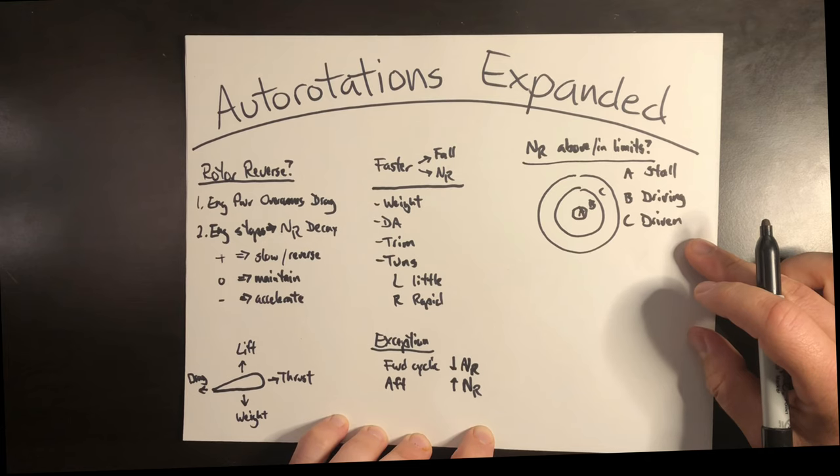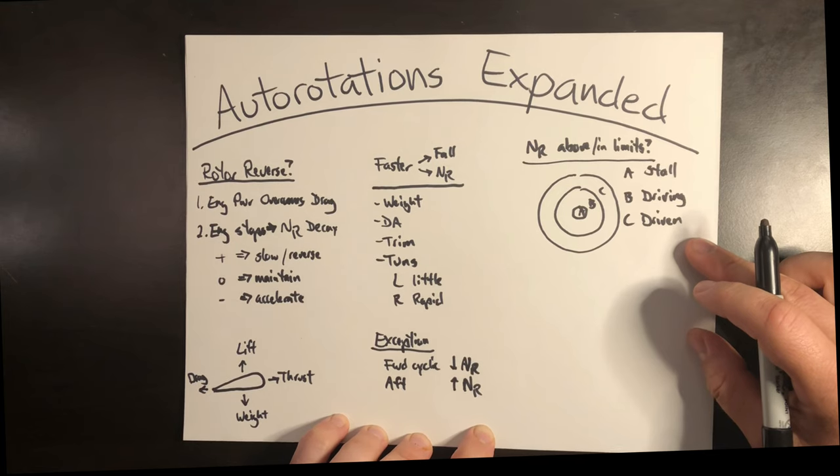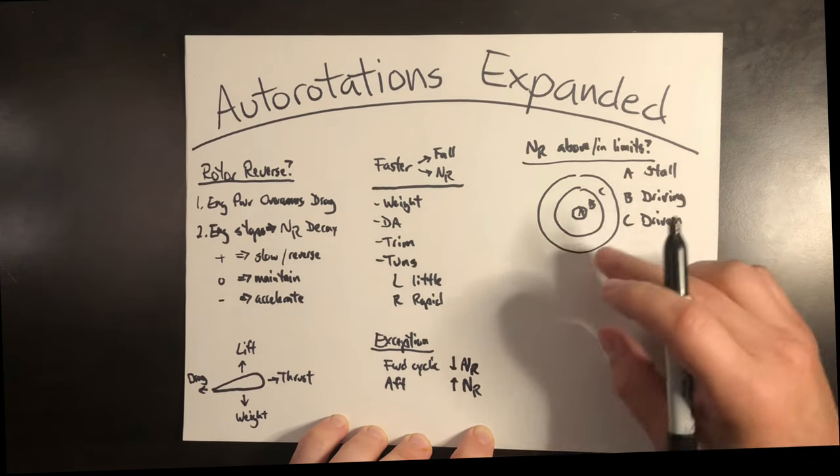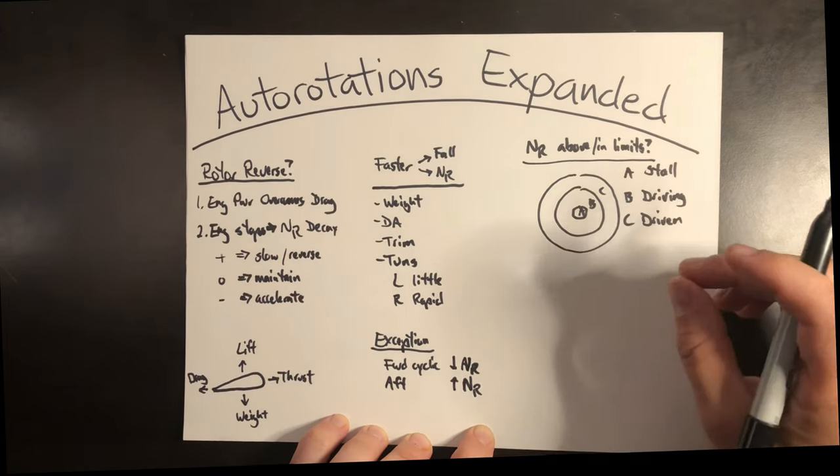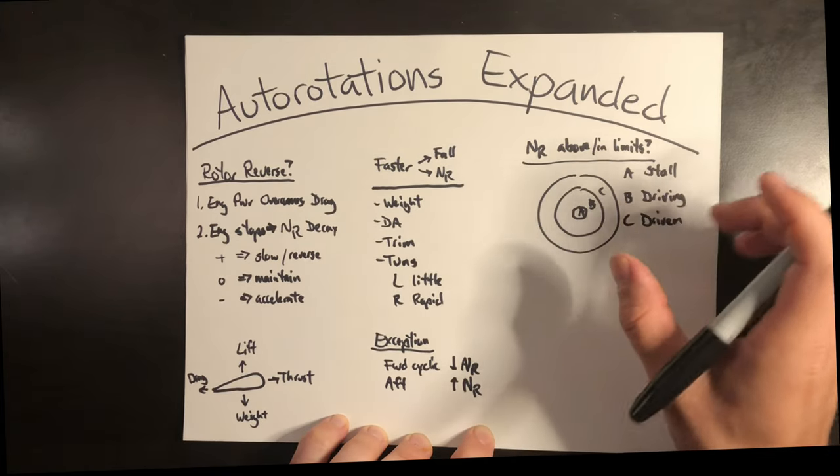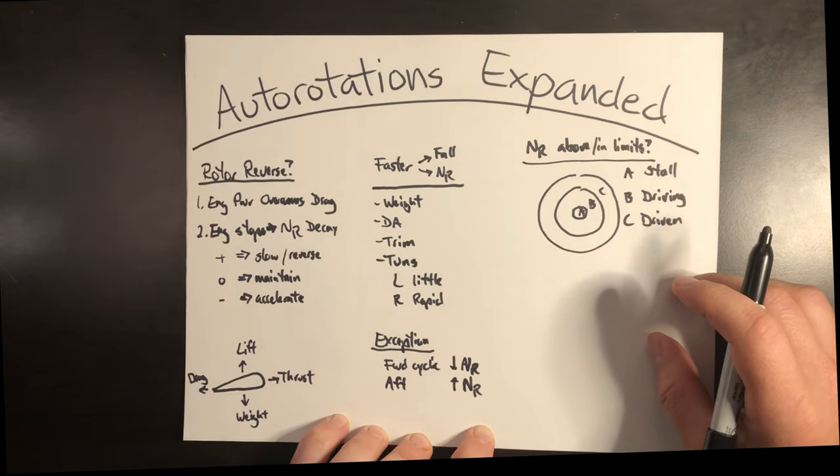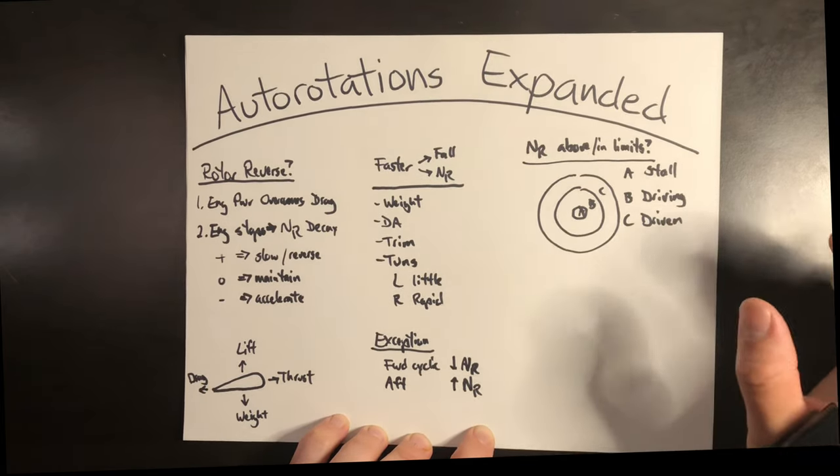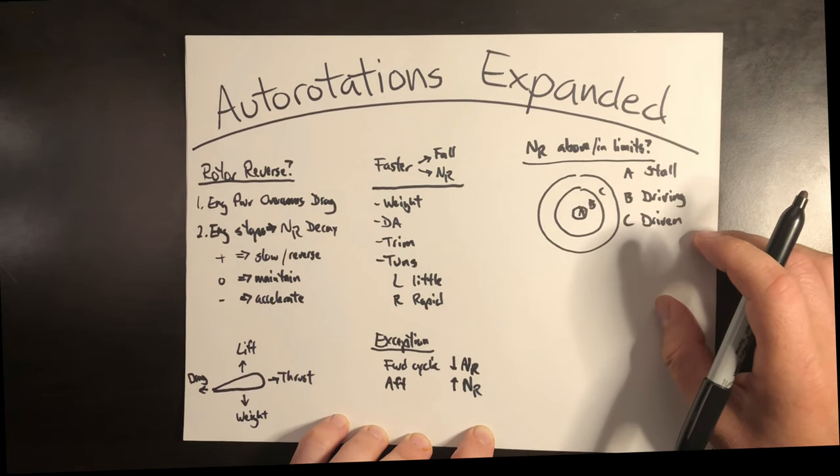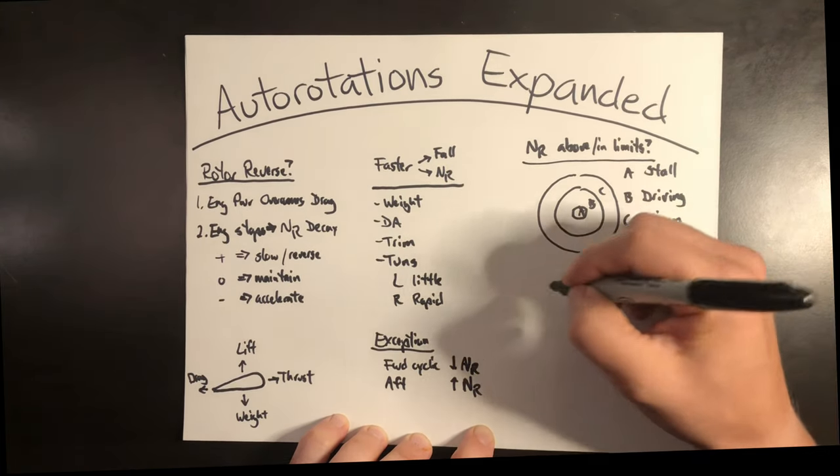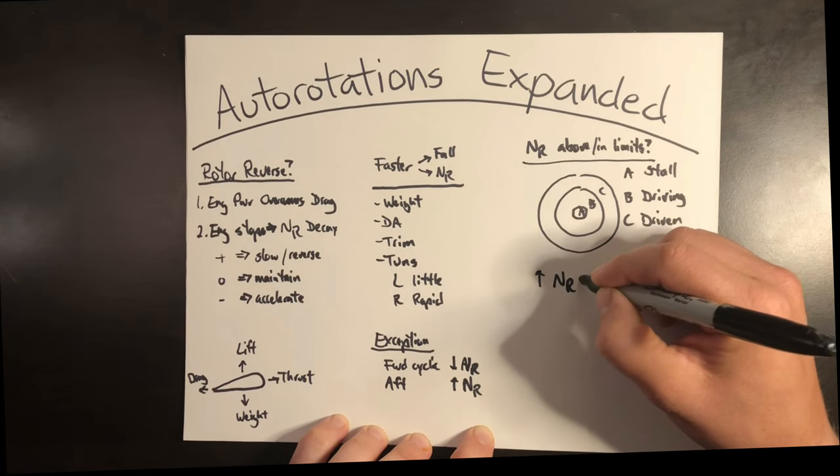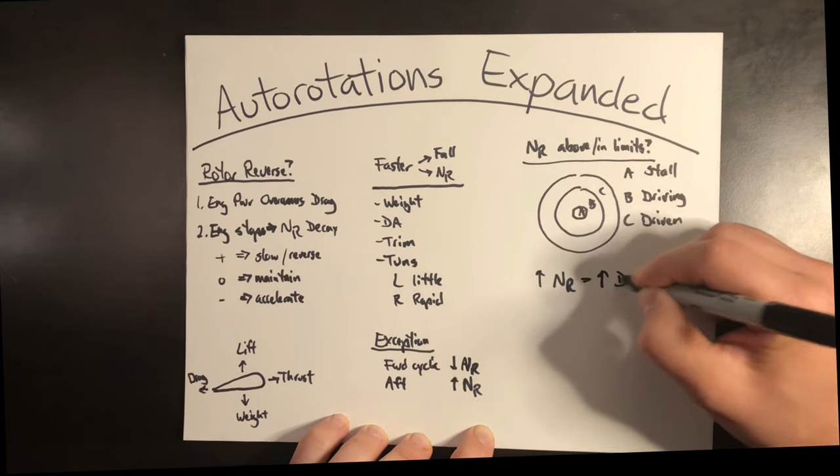The driving region harnesses the upflow of air to maintain rotor RPM. The driven or the lifting region is what affects the glide. Now, most autorotative descent charts are depicted to show an auto with a rotor within limits. But if you autorotate with excessively high rotor RPM, the driving region expands and the driven region shrinks. So these regions aren't fixed. They can expand and contract based on speed of the rotor. This expansion of the driving region translates to higher rotor RPM and higher rates of descent.